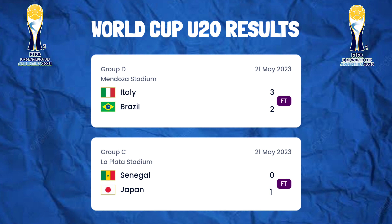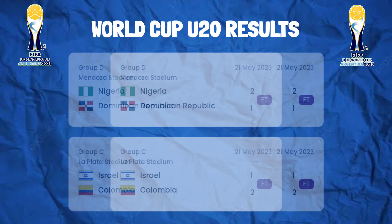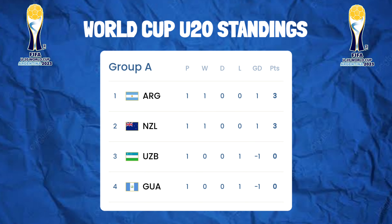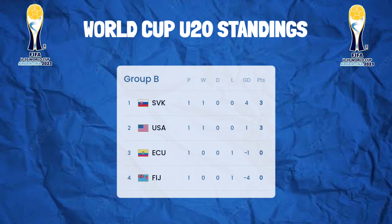Match results for Sunday the 21st of May 2023: Italy won 3-2 versus Brazil, Senegal lost 0-1 versus Japan, Nigeria drew 1-1 versus Dominican Republic, Israel lost 1-2 versus Colombia. Group A standings table: Argentina and New Zealand collected three points.